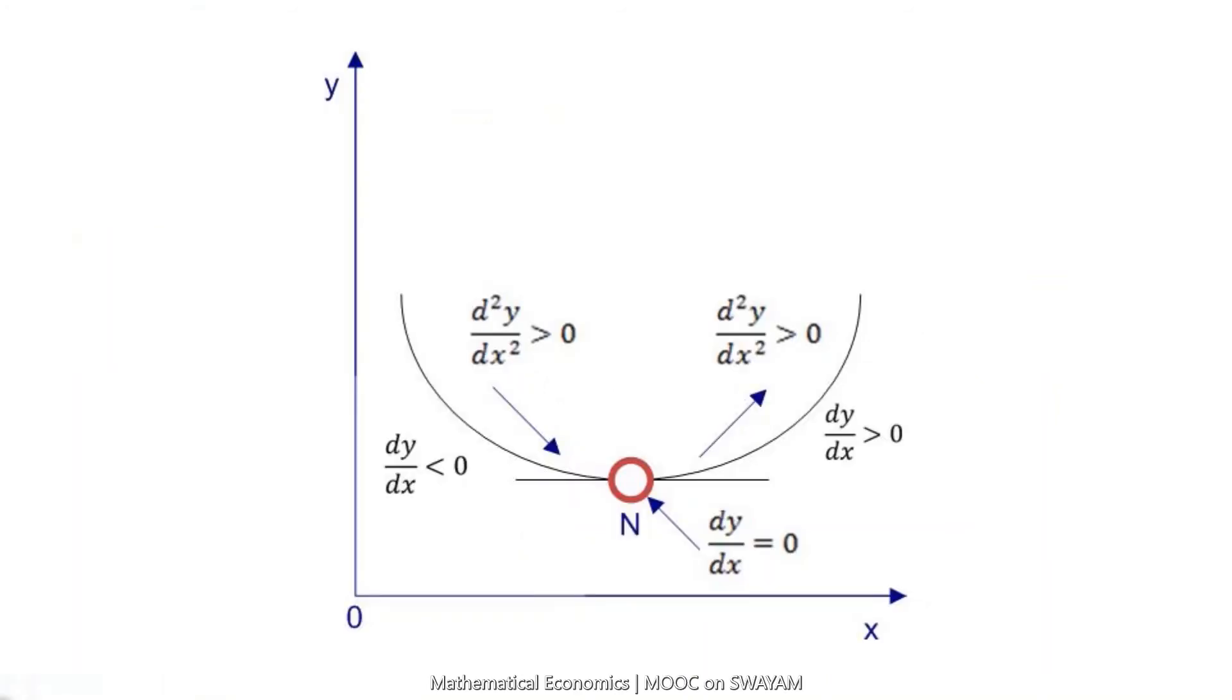In mathematical language, it may be said that before attaining a minimum value, the first derivative is less than 0 and the second derivative is greater than 0. After attaining a minimum value, the first derivative is greater than 0 and the second derivative is also greater than 0. We finally end up with a convex curve.